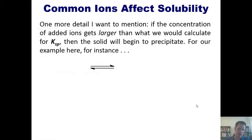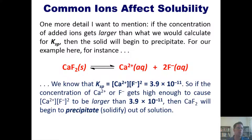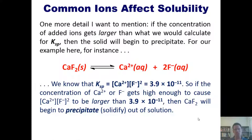There's one more detail to mention. If the concentration of added ions gets larger than what you would calculate for Ksp, then the solid will actually begin to precipitate. For example, with calcium fluoride dissociating into calcium and fluoride ions, the Ksp equals 3.9 × 10⁻¹¹. So if the concentrations of Ca²⁺ or F⁻ get high enough to make their product exceed 3.9 × 10⁻¹¹, calcium fluoride will begin to precipitate out of solution.